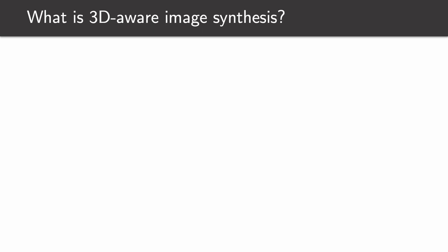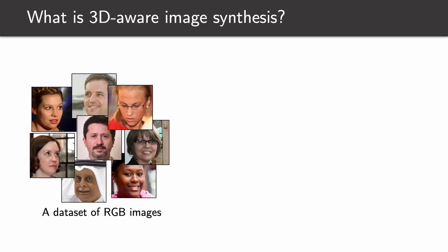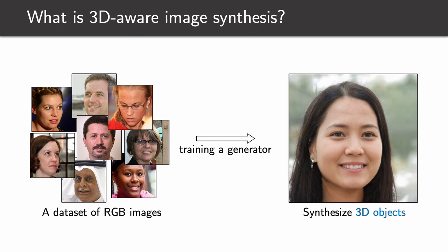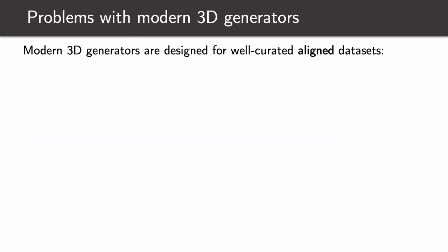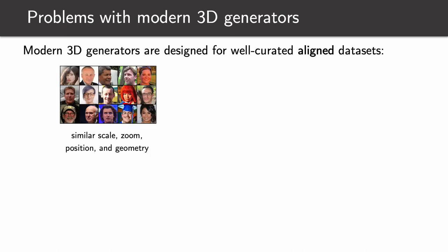What is 3D-aware image synthesis? Imagine that you have a dataset of RGB images, for example images of faces. Then you want to train a generator which would learn to synthesize 3D objects. There are two big problems with modern 3D generators. First, they are designed for well-curated aligned datasets where all the objects have similar scale, zoom, position, and global geometry.